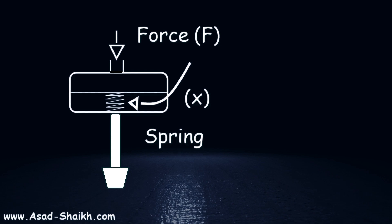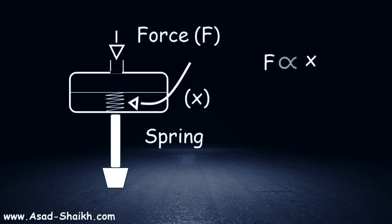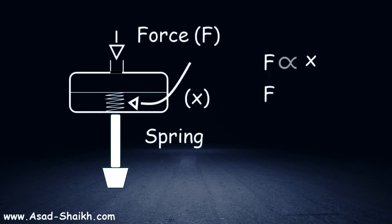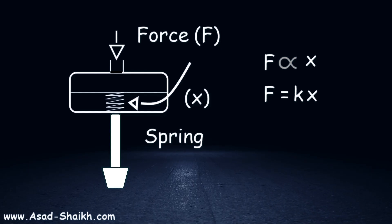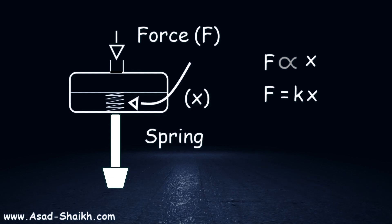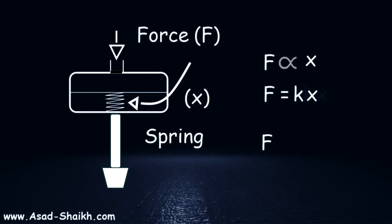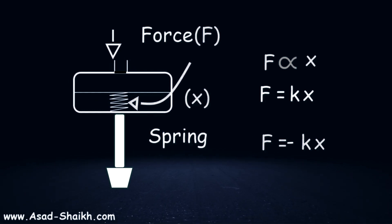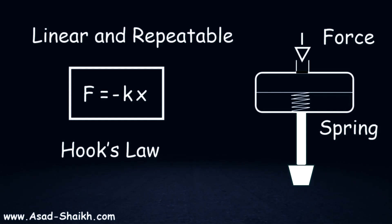As per Hooke's Law, the force F is proportional to the displacement x. That means if we put a proportionality constant k in between, we will have F equals the spring constant times the displacement. But this equation has one major flaw. The force is actually not directly impacting the spring, it is negatively impacting. The spring is opposing the force, so we get a minus sign here. This is what forms Hooke's Law. The important thing to note in Hooke's Law is that it is linear and repeatable.